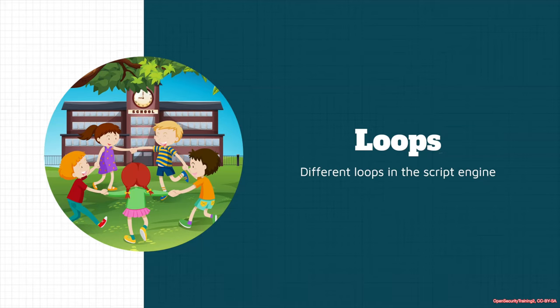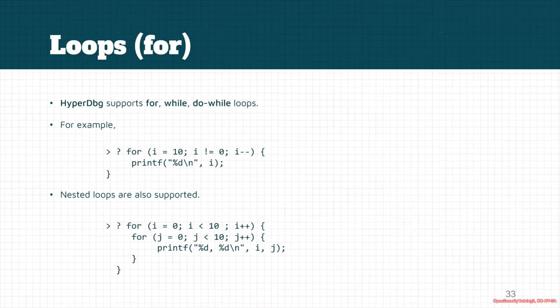The same thing is also true about loops. There are different loops in the script engine HyperDbg. Just like C language, HyperDbg supports for, while, and do-while loops. For example, if you want to have a very simple loop